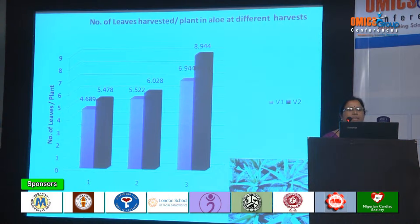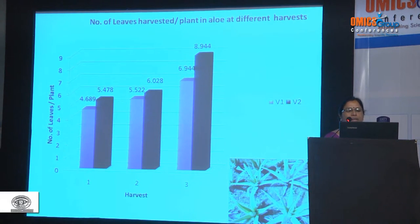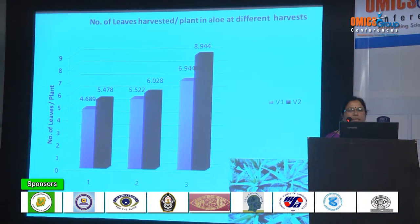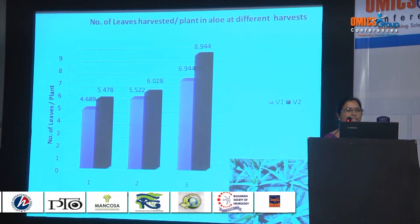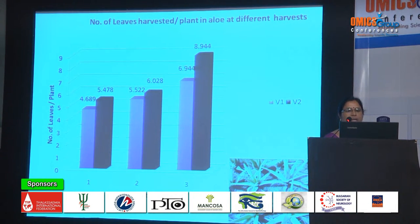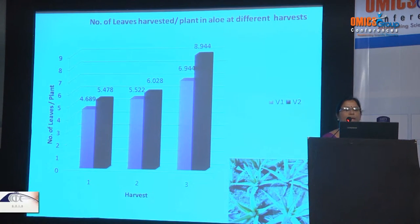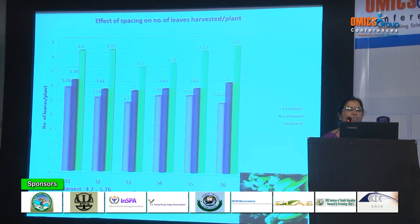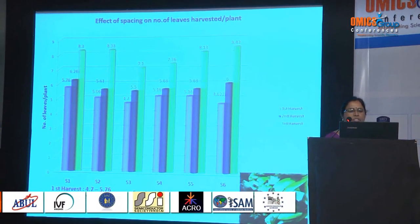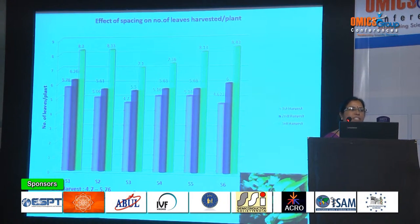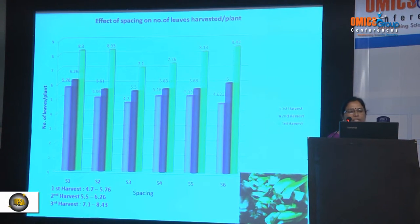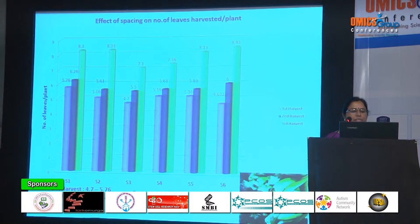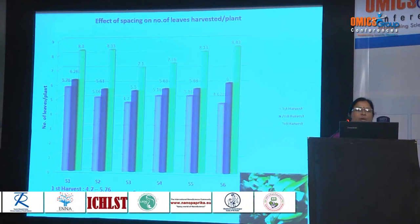This slide shows the number of leaves harvested per plant at different harvests. There is a significant difference between the two varieties with reference to number of leaves per plant. The yellow flowering type produced more leaves, continuing across second and third harvests. In the third harvest, yellow flowering type produced 8.94 leaves per plant, whereas the orange flowering type produced fewer. No significant difference was found between spacings for number of leaves. The average range was 4.7 to 5.76 in first harvest, 5.5 to 6.26 in second harvest, and 7.1 to 8.43 in third harvest.